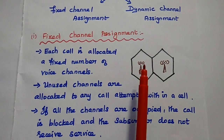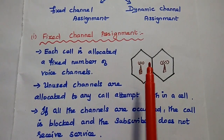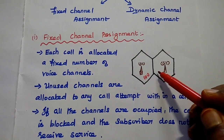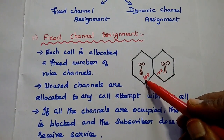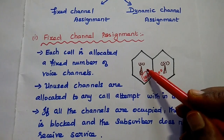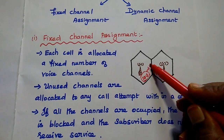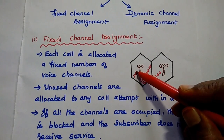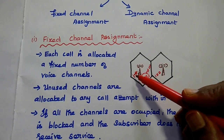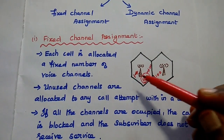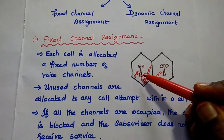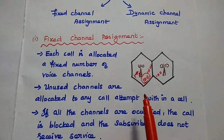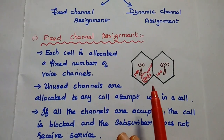If all the channels are occupied or busy with the subscribers — for example, 100 channels are allocated to each cell and all 100 channels are occupied with 100 users — if one more user tries to connect to the service, then that particular new call is blocked and that subscriber does not receive any service. That is the major problem in fixed channel assignment.